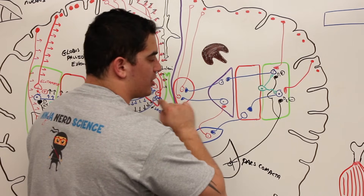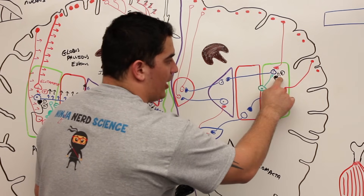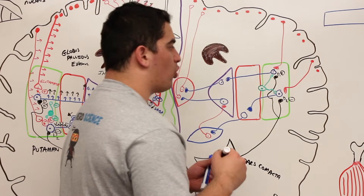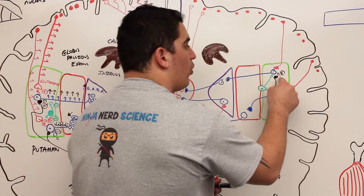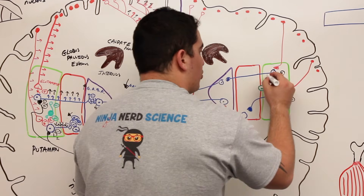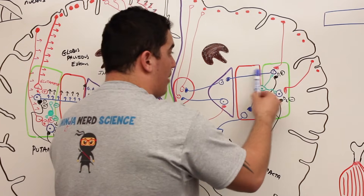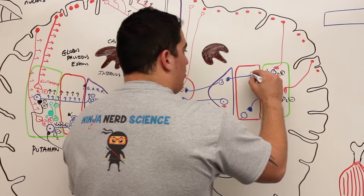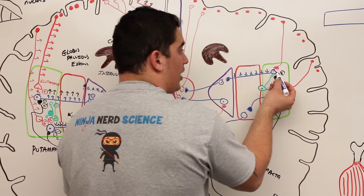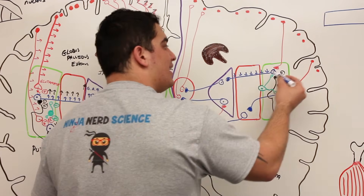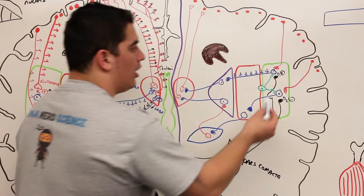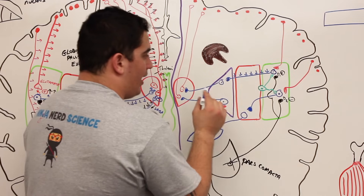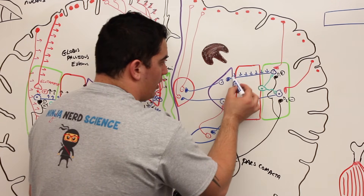Looking at the direct pathway first: if there's less dopamine released onto this neuron, there's less stimulatory input. With less stimulatory input from dopamine, the action potentials of these GABAergic neurons — coming from the putamen all the way to the globus pallidus internus — will decrease, because there's less stimulatory input from the dopamine due to neuron destruction.